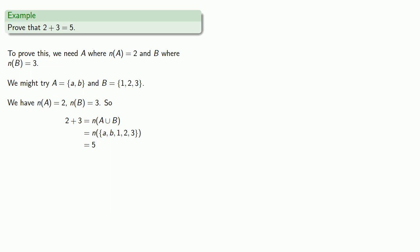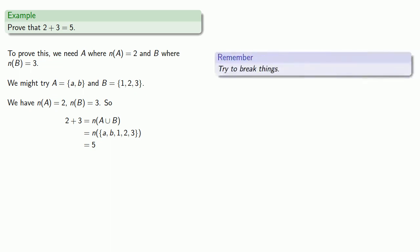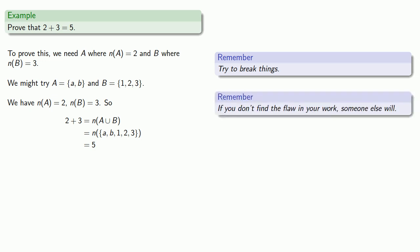So far so good, but here's a useful idea when doing anything creative: try to break things. This is really another way of saying that if you don't find the flaw in your work, someone else will. So apparently we have proven that two plus three equals five based on our definition of addition — but let's try to break this definition and see what happens.